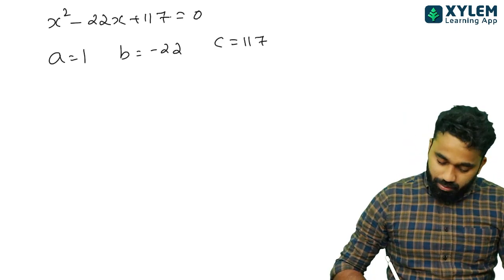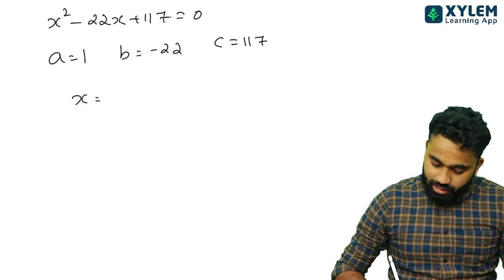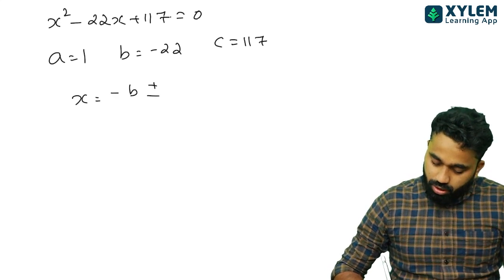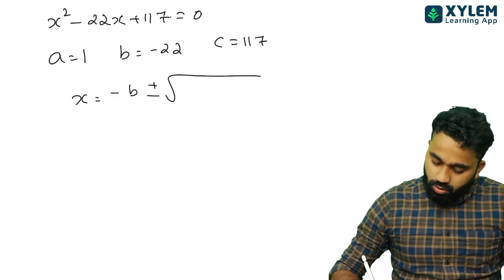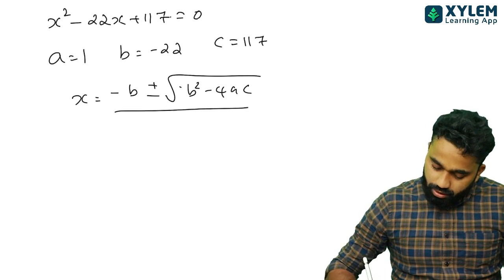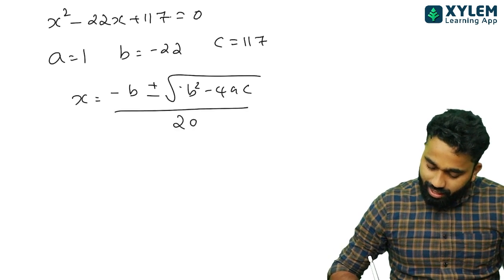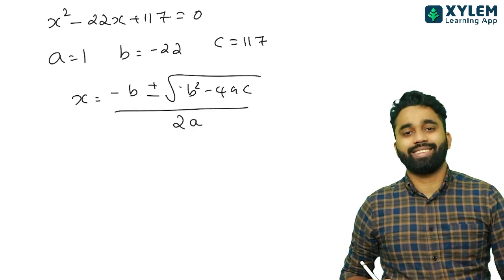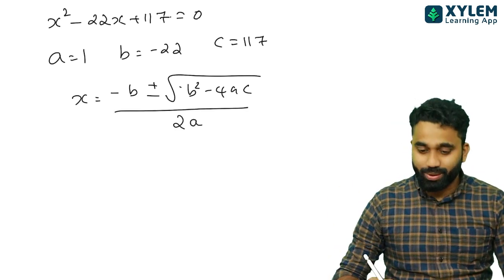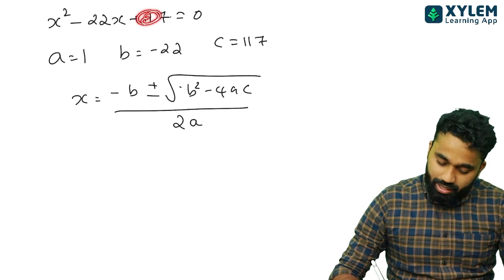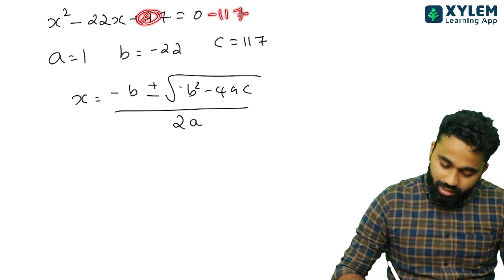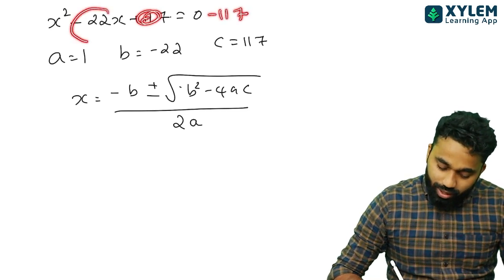X equals minus B plus or minus root of B squared minus 4AC, all over 2A. The best method to solve this is square completion.